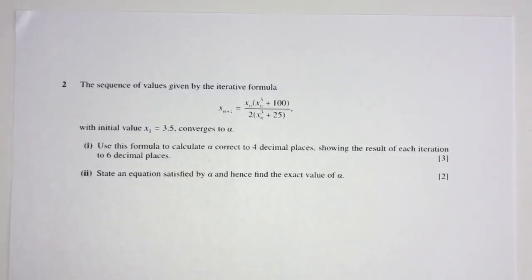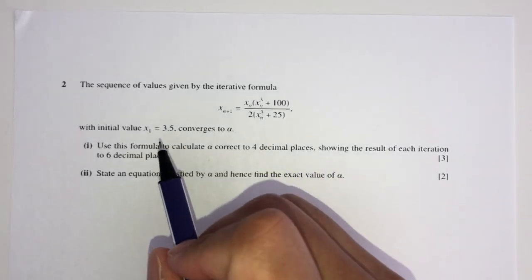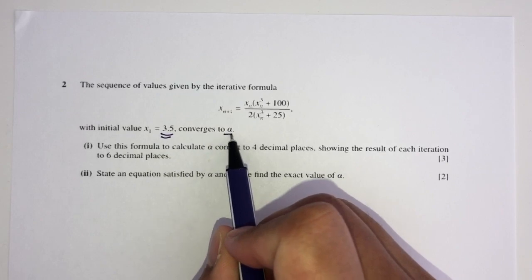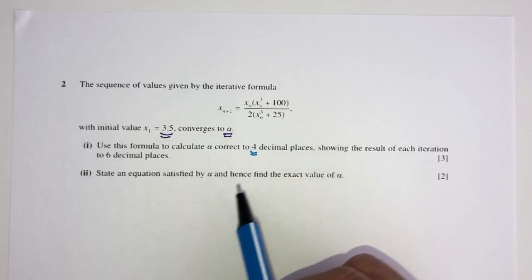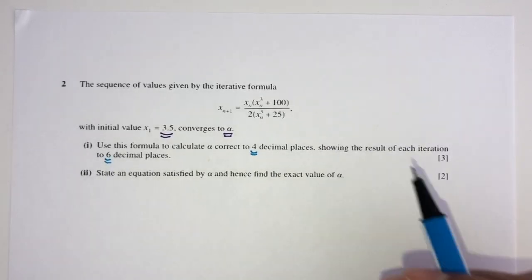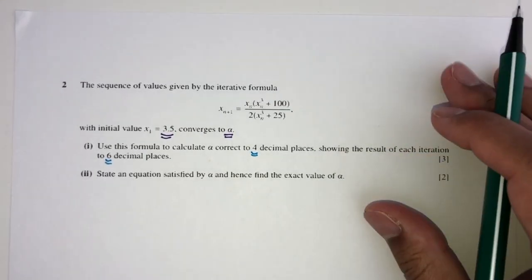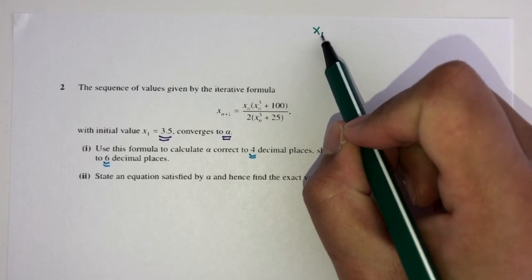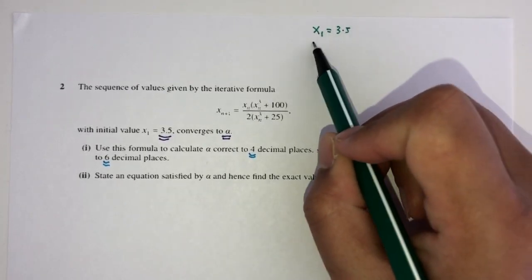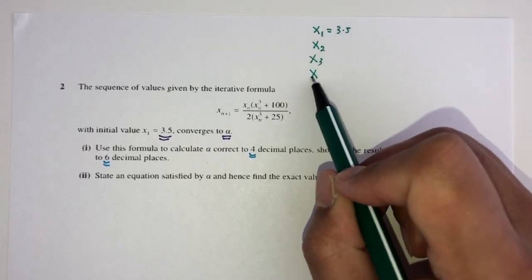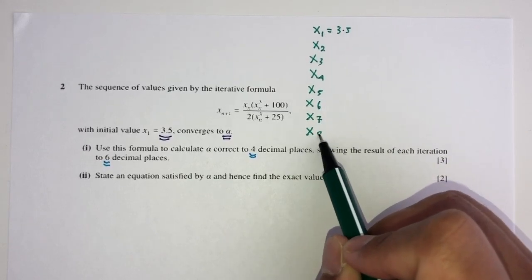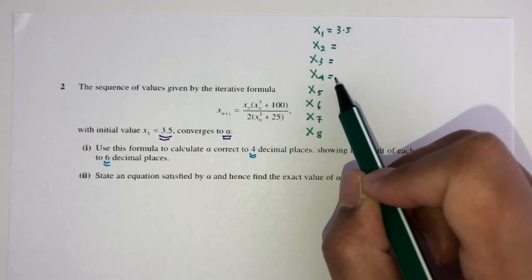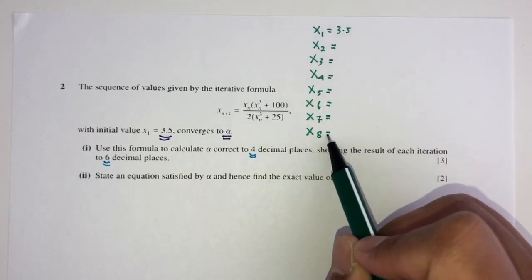Now let's move on to question number 2. Here, a sequence of values is given by a formula with initial value x₁ equal to 3.5, and it converges to alpha. We have to calculate alpha to 4 decimal places, showing each result to 6 decimal places. So x₁ is given as 3.5. We plug values into the formula: x times x cubed plus 100, divided by 2 times x cubed plus 25.